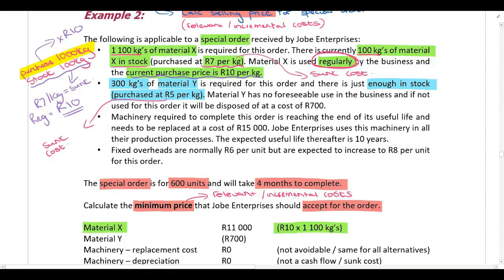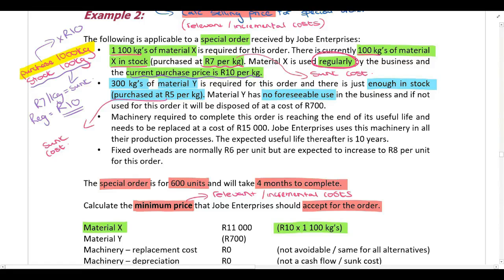The 5 Rand per kilogram original purchase price is not relevant because it's a sunk cost — money spent in the past. So we need to assess Material Y further. We are told they have no foreseeable use for this material in their business. If we don't use it for this order, it will have to be disposed of at a cost of 700 Rand — so here we have an opportunity saving.